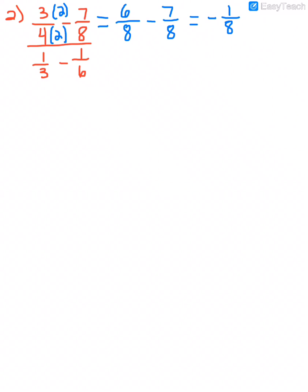Once I get it down to a single fraction, I'm done with that part of the complex fraction. Now I can move down to the denominator. The least common denominator in the denominator is 6, so I need to multiply that first fraction times 2. Multiplying both the numerator and denominator times 2 gives me 2 over 6 minus 1 over 6. Putting those together, I get positive 1 over 6.